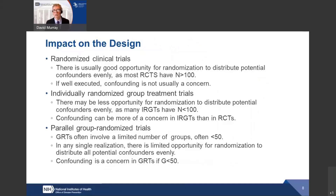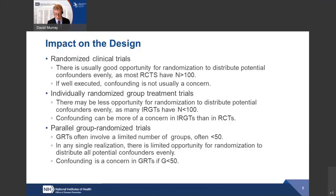Randomized clinical trials have a good opportunity for randomization to distribute potential confounders evenly, because they usually have a large number of units of assignment — if well executed, we don't have to worry about confounding. In parallel group randomized trials, we often have a limited number of units of assignment, so confounding is the rule rather than the exception. In individually randomized group treatment trials, it depends on the size — with many participants it may not be an issue, but in smaller studies it could be.